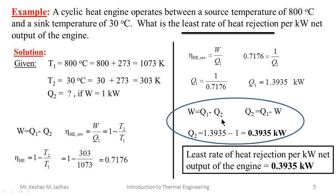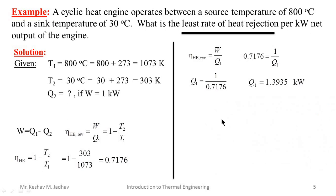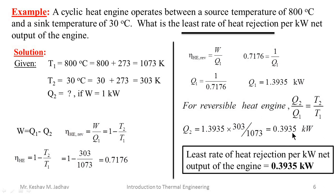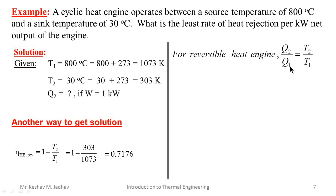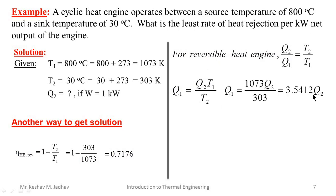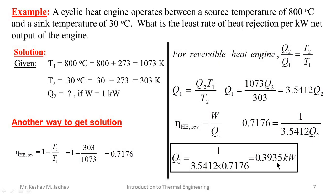We can also use an alternative formula. Since this is a reversible heat engine, we can use Q2 upon Q1 equals T2 upon T1. With T1, T2, and Q1 known, we get Q2 equals 0.3935 kW, which is the same as before. Another method is to express Q1 equals Q2 times T1 upon T2, giving Q1 equals 3.5412 Q2, then substituting into the efficiency formula with efficiency 0.7176 and W equals 1, solving for Q2 again gives 0.3935 kW.